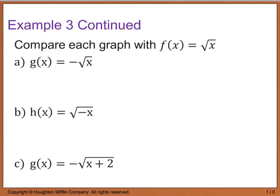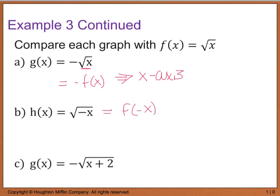Example 3 says to compare each graph with f of x equals the square root of x. For part a, g of x equals negative square root of x. This graph is a reflection of f in the x-axis because if I change the sign of the function itself, I'm really changing the y values while x's stay the same — giving me the opposite of my f of x. This tells me I have a reflection in the x-axis. Likewise, with h of x, my values for x are changing, so this is telling me I really have f of negative x. Since the sign of my x values is changing, this tells me I have a reflection in the y-axis.